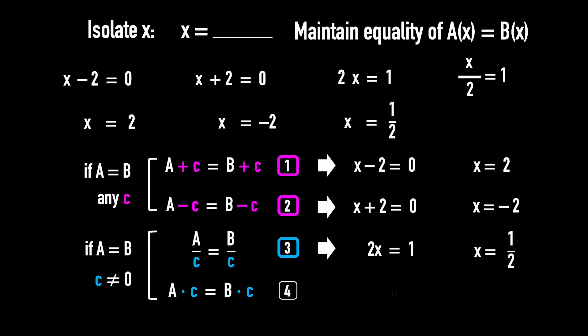Similarly, example 4. X over 2 equals 1. Apply rule number 4. Multiply both sides by 2. And simplify. We get X equals 2.